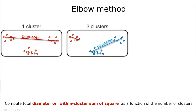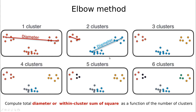You can repeat that for three clusters, four clusters, and so on, iterating until you have a clear map of when the diameter is large and when it's lower. Of course, having just one cluster is not desirable because the diameter is huge. But the other extreme is also not desirable — you have smaller diameters but the clusters don't make any sense.